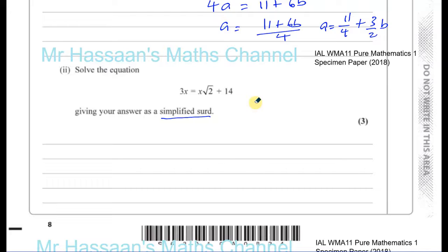So when we're solving an equation, if the equation said 3x equals 2x plus 14, there would be absolutely nobody who would have any problem with this question. We've got to bring the x's together. And this is exactly what we have to do here. There's an x term and an x term. This is just a number. So what I'm going to do is I'm going to bring the x's together on one side of the equation. So 3x minus x times root 2 is equal to 14.